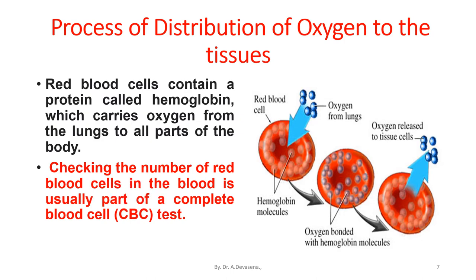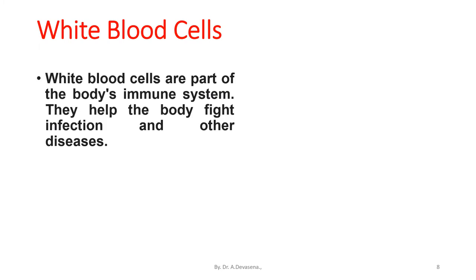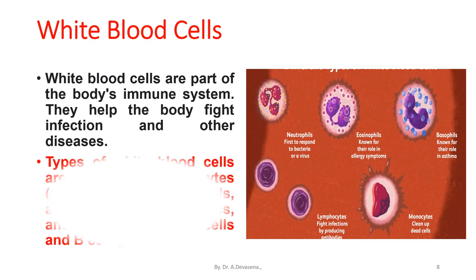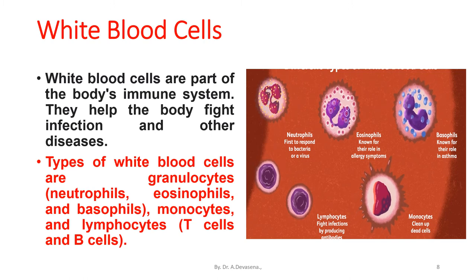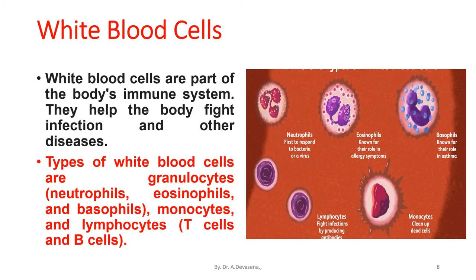Checking the number of red blood cells in the blood is usually part of a complete blood cell, that is CBC test. White blood cells are part of the body's immune system. They help the body fight infection and other diseases. The types of white blood cells are granulocytes, which comprises of neutrophils, eosinophils, and basophils, monocytes and lymphocytes.